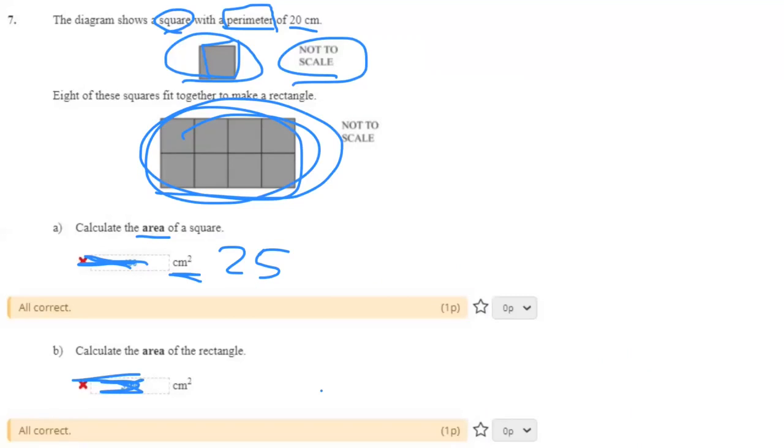All right. Keywords here. Eight of these squares fit together to make the rectangle. Here is the rectangle. All right. Eight of these squares, which is this one over here we calculated just now, fit together to make a rectangle.